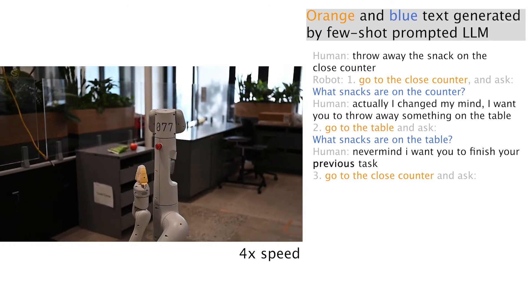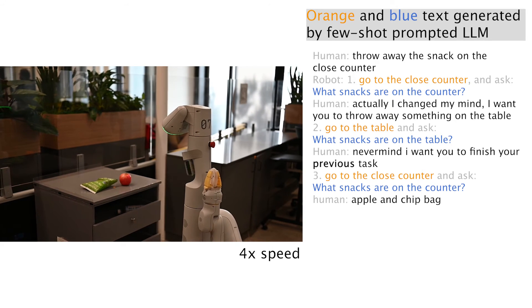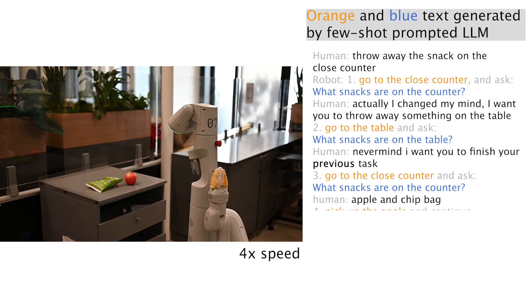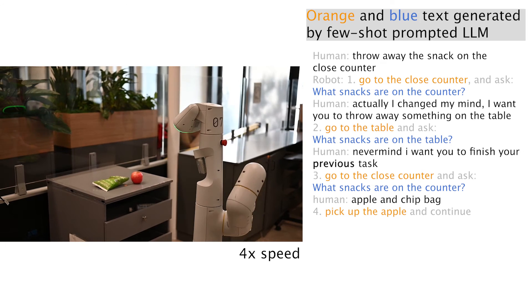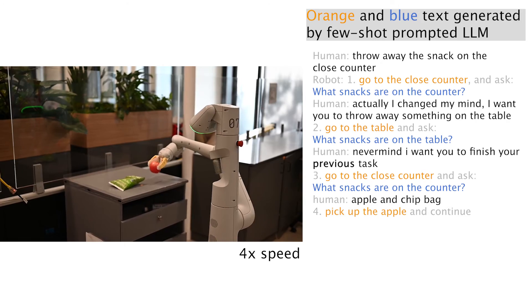When the robot goes to the table, the human operator says, never mind, I want you to finish your previous task. Finally, after asking the human operator what snacks are on the counter, the robot picks up the apple and goes to the preset trash can location.